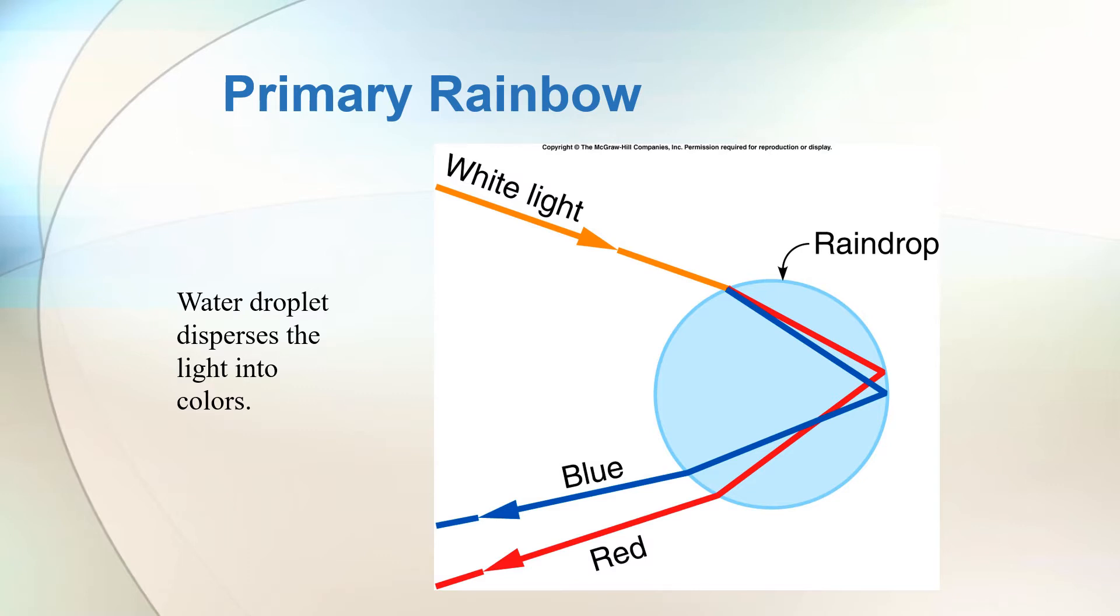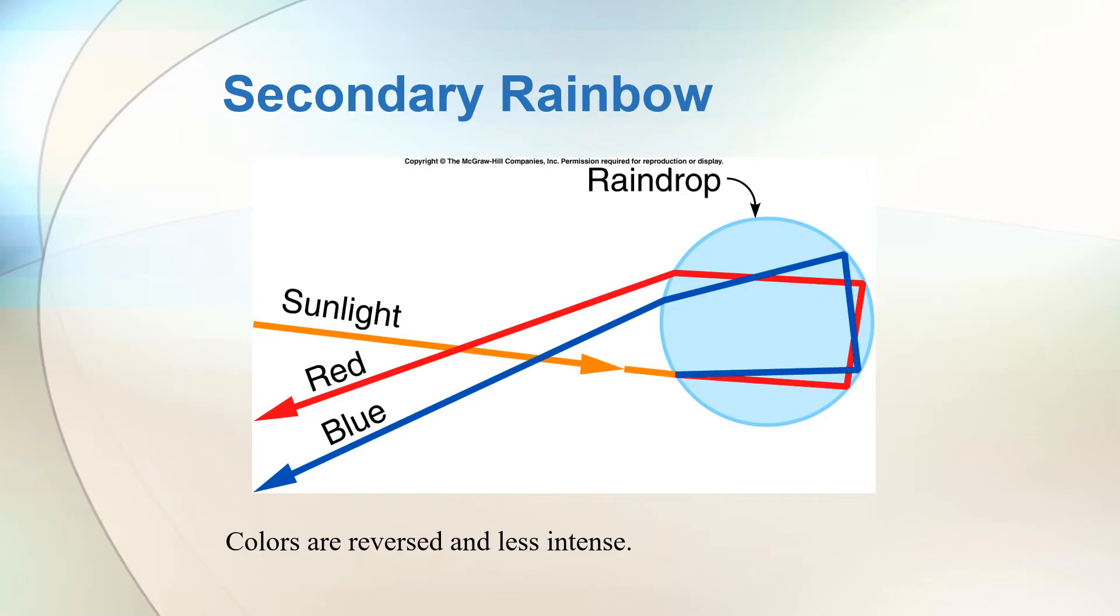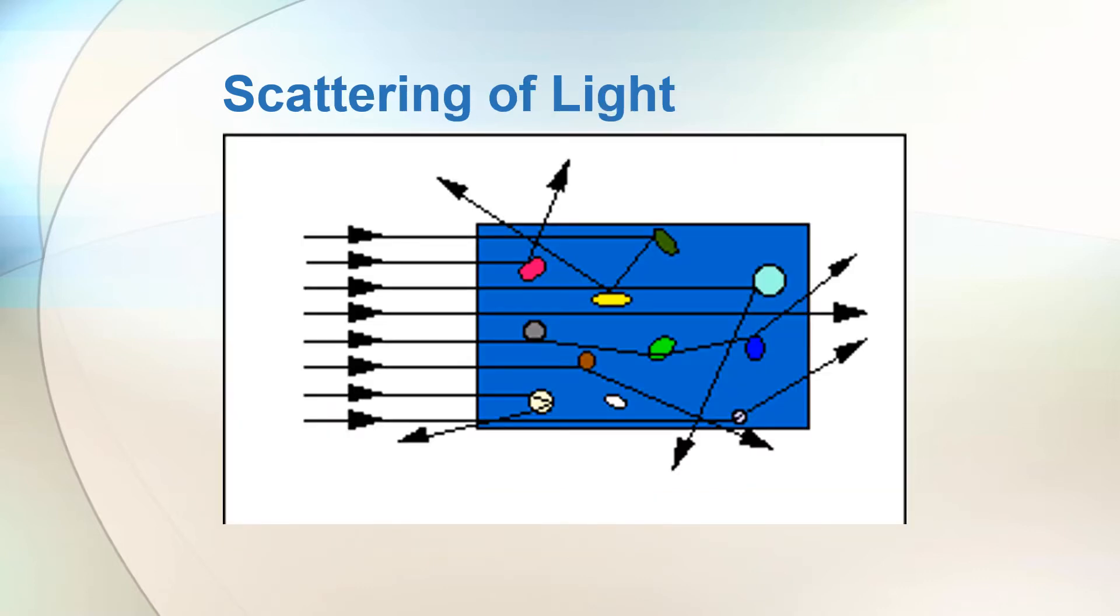When you see the red color at the bottom, you have a primary rainbow. When the colors are reversed and less intense, you have a secondary rainbow. Refraction and dispersion are responsible for rainbow formation.